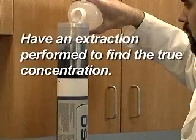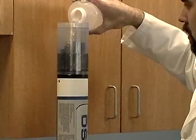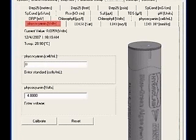Have an extraction performed on the sample to find the true concentration. When the results of the extraction are known, the sensor is recalibrated using this value. The secondary calibration will be done under the Phycocyanin volts tab or the Phycoerythrin volts tab.